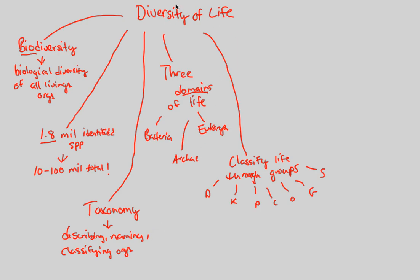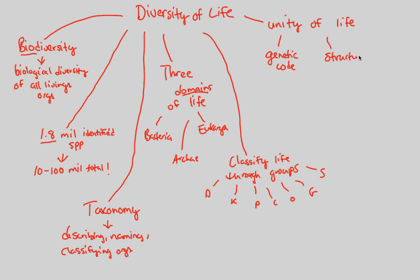Finally, because there's diversity of life, we know there is also — and I think this is quite poetic — a unity of life. Though there is a great amount of diversity, there is still a unity of life that we see mainly in the genetic code: the A's, T's, C's, and G's of life, and also in the structure of life. The things that the genetic code codes for, the structure we see in life, are quite unified in nature.